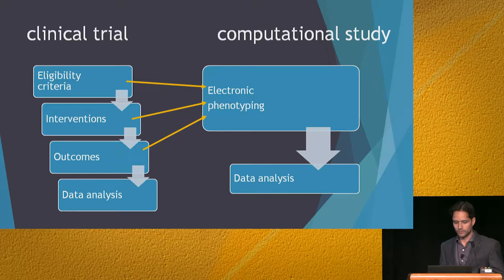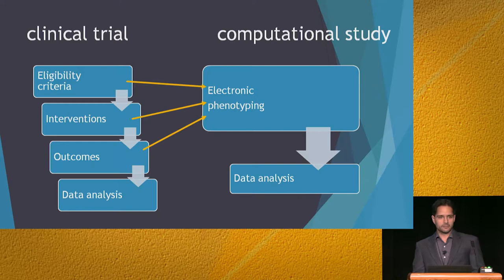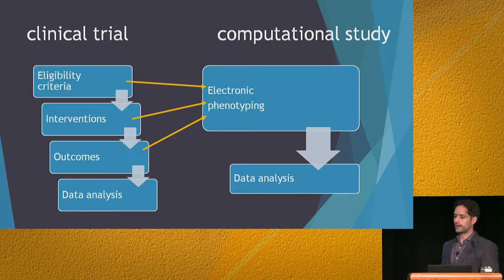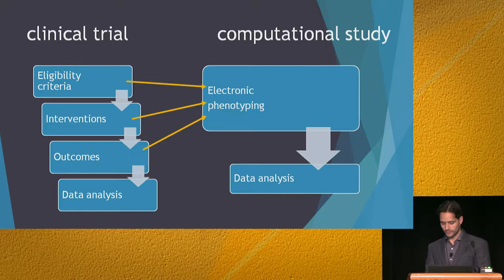We know that we can do studies that produce medical evidence analogous to clinical trials. In fact, three years ago I did one of those studies, and personally I was impressed by how similar the results from my study were to the results of the paper from the journal Critical Care that I was replicating. So what I want to call attention to here is: what about we take this paradigm of study replication and apply it to clinicaltrials.gov?